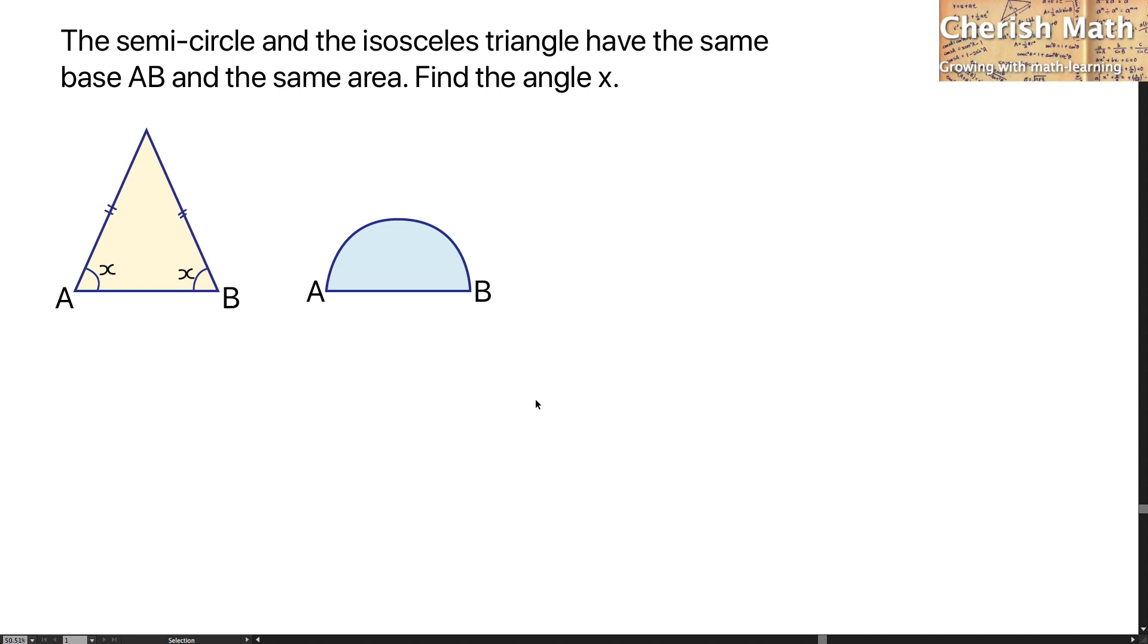Hi from Cherish Math. This is our question for today. The semicircle and the isosceles triangle have the same base AB and the same area. Find the angle X.